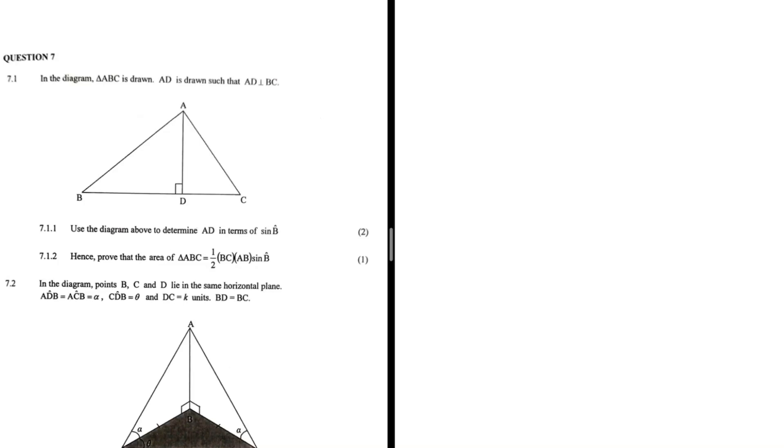What can I say about this question — it's not difficult but tricky and quite interesting. In the diagram, triangle ABC is drawn; AD is drawn such that AD is perpendicular to BC.